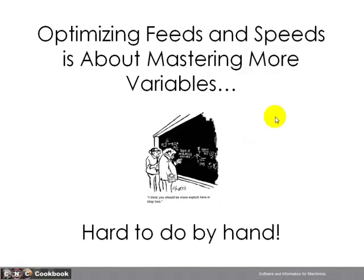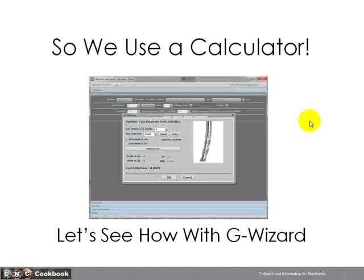Optimizing feeds and speeds is all about mastering more variables, but doing that by hand is a lot of work. Machinists resort to long Excel spreadsheets, and some tooling manufacturers require multiple calculators to figure out all these different parameters — it's a real pain to do by hand. The answer is to use a calculator, and that's what G-Wizard is all about. Let's do a quick demo and see how these different factors are handled by G-Wizard.